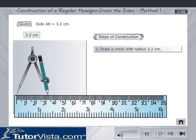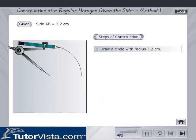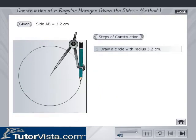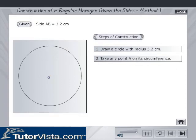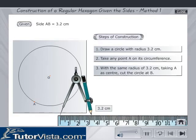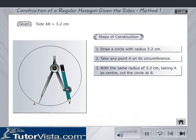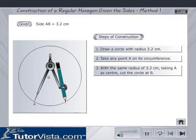Draw a circle of radius 3.2 cm. Take any point A on its circumference. With the same radius of 3.2 cm, taking A as center, cut the circle at B.